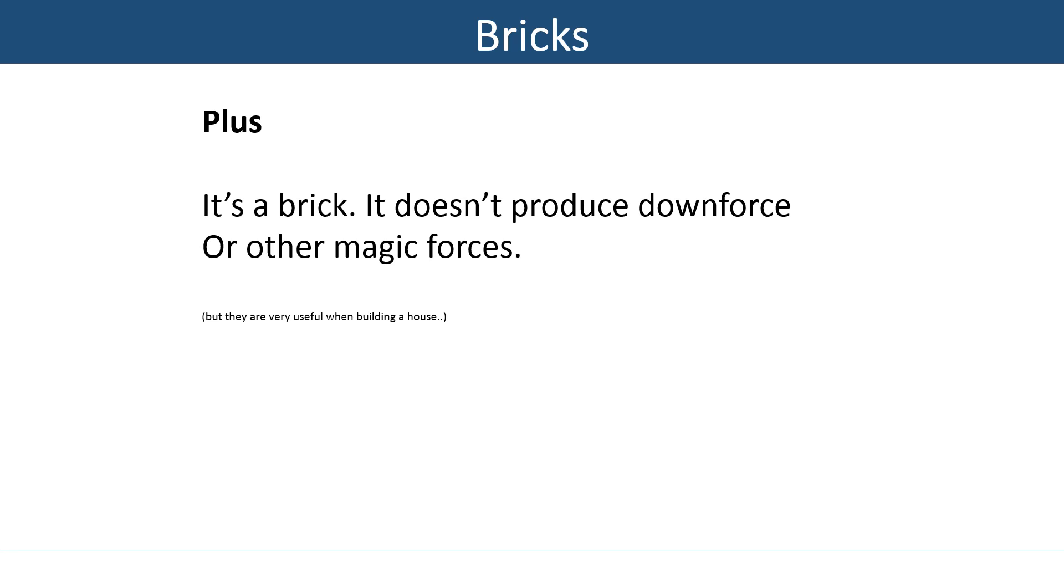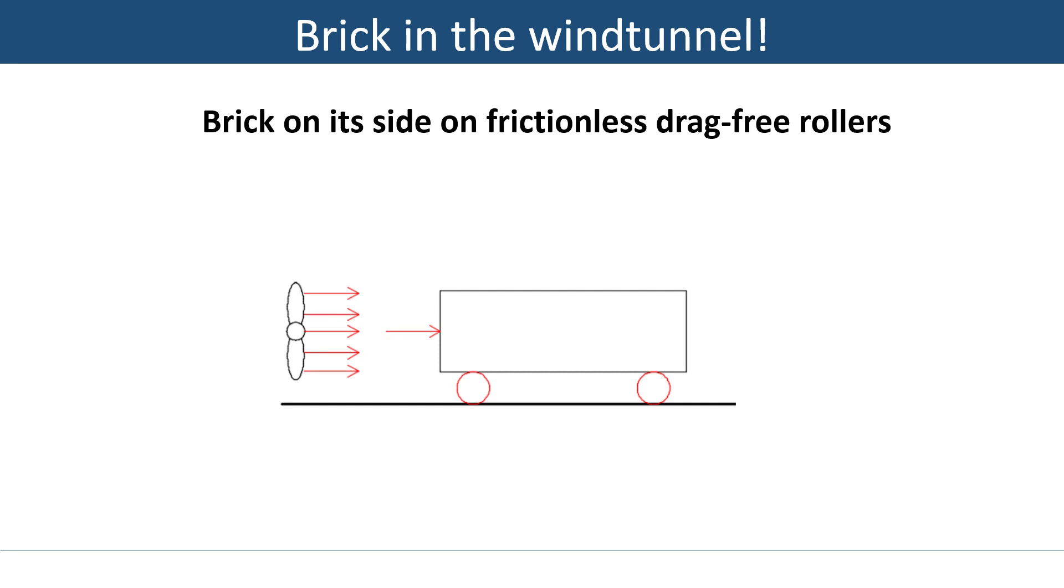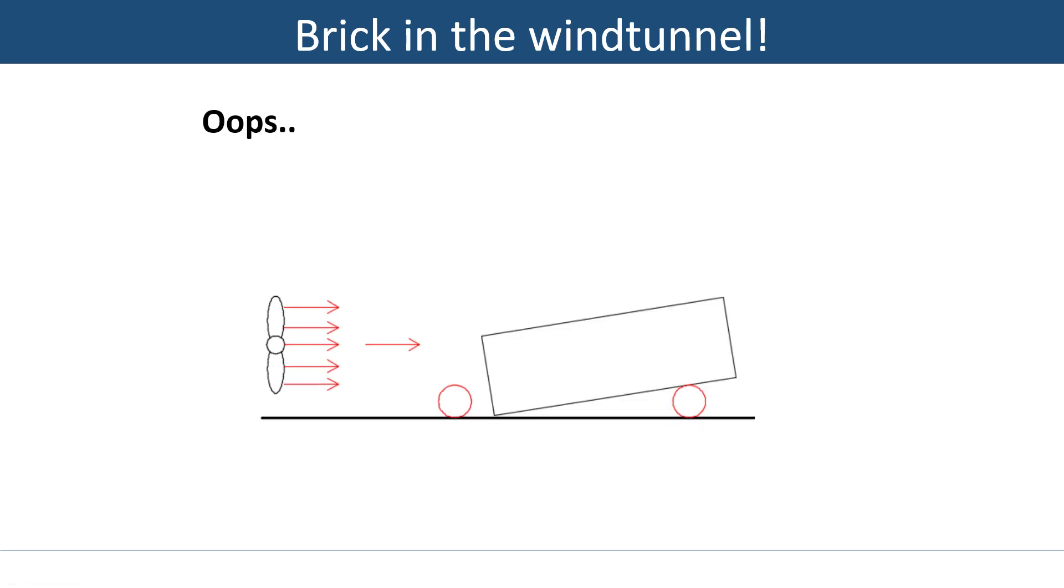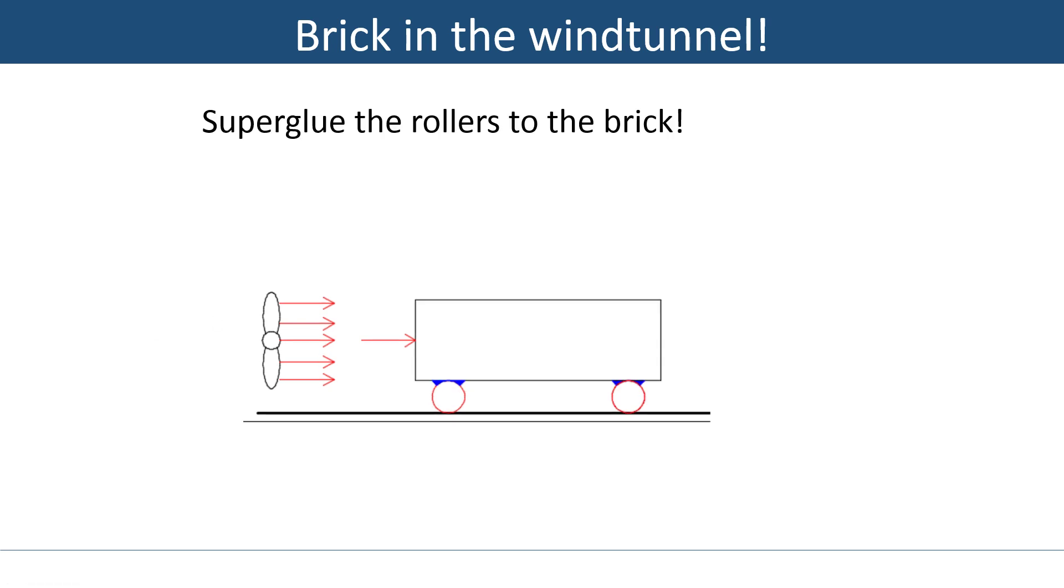Yes, it's a brick, it doesn't produce magic downforce or whatever. But I don't want to diss on the bricks, they are very useful for many things. Alright, now let's make the translation, or the rotation rather, to being in a wind tunnel with this brick. Imagine this nice propeller here is the wind tunnel and we put the same brick on its side and we add some friction-free magic rollers so it's resting on those. If we then turn on the fan, this will happen - the brick will be blown backward and fall off the roller. So this experiment is currently failing. How can we fix that? Well, how about gluing the rollers to the brick?